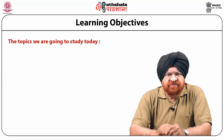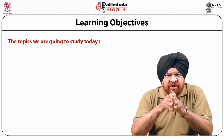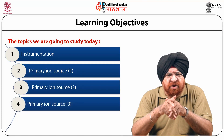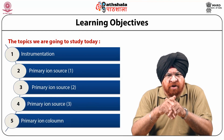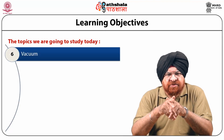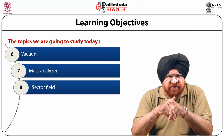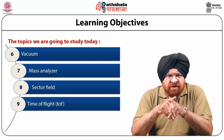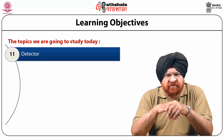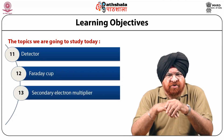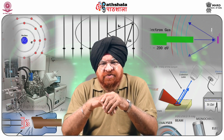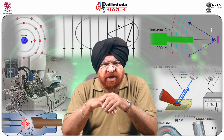The topics covered in this module will deal with Instrumentation: Primary Ion Source 1, Primary Ion Source 2, and Primary Ion Source 3. Primary Ion Column will also be covered, which will include vacuum, then Mass Analyzer, followed by Sector Field, Time of Flight, Quadrupole, Detector, Faraday Cup, Secondary Electron Multiplier, and finally Micro Channel Plate Detector — these are the main components of the spectrometer.